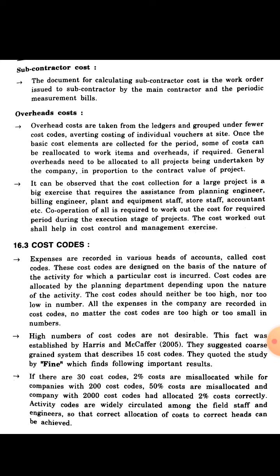A high number of cost codes is not desirable. This fact was established by Harris and McCaffer in 2005. They suggest a coarse grain system describing about 15 cost codes. They quoted a study showing that with 30 cost codes, 2% of costs are misallocated, while with 200 cost codes, 50% of costs are misallocated, and a company with 2000 cost codes had only 2% of costs allocated correctly.